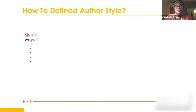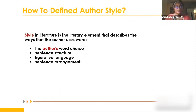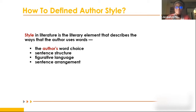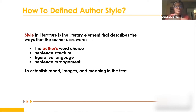Style in literature is a literary element that describes the ways the author uses words - word choice, sentence structure, figurative language, and sentence arrangement - all contributing to establish mood, images, and meaning in the text.